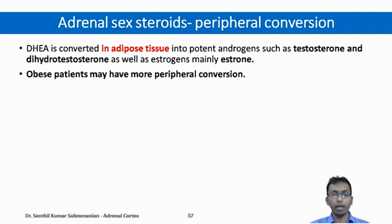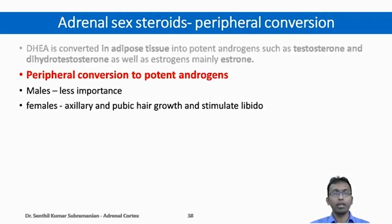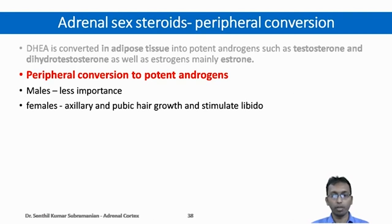Hence in obese patients, there may be more peripheral conversion and more potent androgens and estrogens circulating in the blood. The secreted adrenal androgens and estrogens are very less, but peripheral conversion plays an important role. In males, peripheral conversion to potent androgens is of very less importance. But in females, the converted androgens play an important role in axillary and pubic hair growth and stimulate libido.